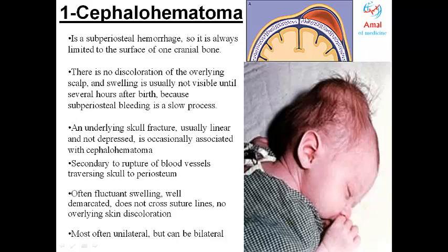Cephalohematoma is always limited to the shape of the cranial bone, as illustrated in the image above — it does not cross any suture lines. There is no discoloration, ecchymosis, or petechiae on the overlying scalp; the skin color appears normal. Cephalohematoma is not obvious directly after birth — it usually appears several hours to days after birth because subperiosteal bleeding is a very slow process. It is usually accompanied by a linear skull fracture rather than a depressed fracture.